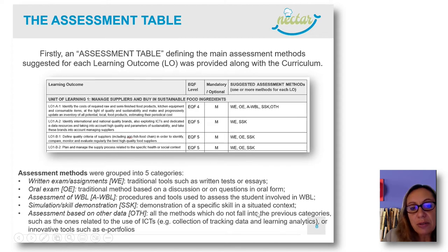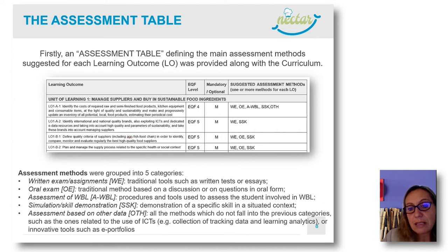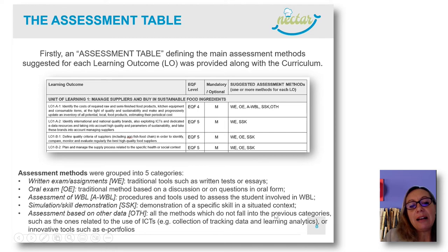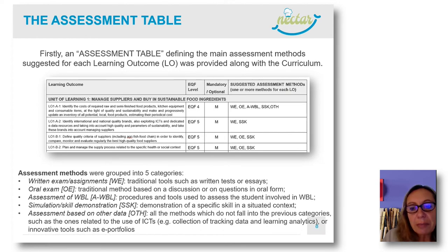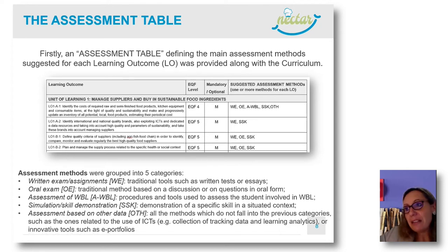What you see are codes — acronyms for five main categories of assessment methods we identified. Written exams: traditional tools such as written tests or essays. Oral exam: traditional methods based on discussion questions in oral form. Then assessment of work-based learning, which includes procedures and tools used to assess students involved in work-based learning. Then simulation or skills demonstration in a situated context. And the last category is everything that doesn't fall in the previous four — assessment based on other data, for instance those related to ICT use, tracking the activity of a student on an online platform.